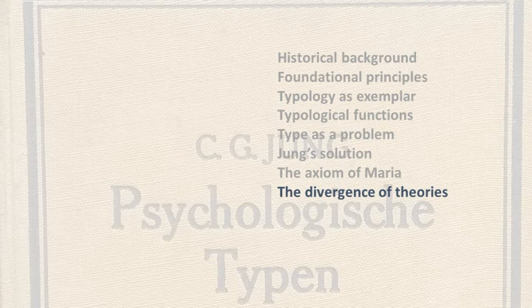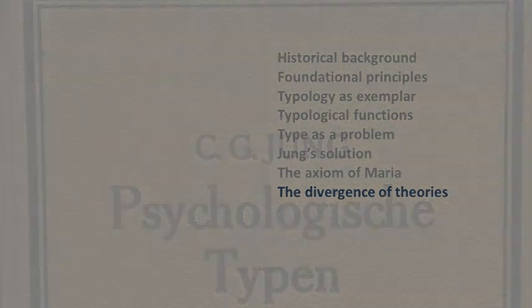Myers saw that Jung had identified a problem in Psychological Types, but the problem she saw was different to the one that Jung saw. And she came up with her own solution, which was very different from Jung's solution. We'll look at how the two theories diverged.